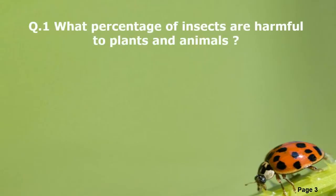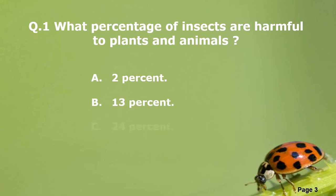Question Number 1. What percentage of insects are harmful to plants and animals? A: 2 percent. B: 13 percent. C: 24 percent. D: 48 percent.